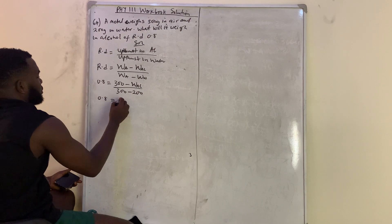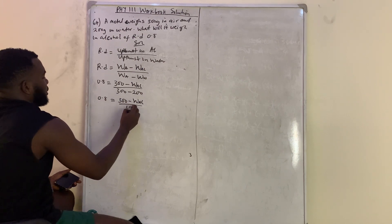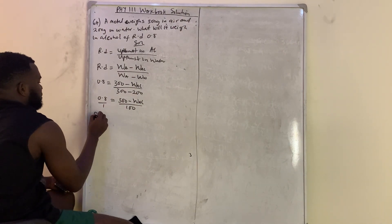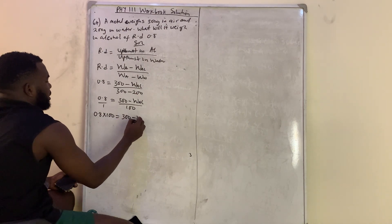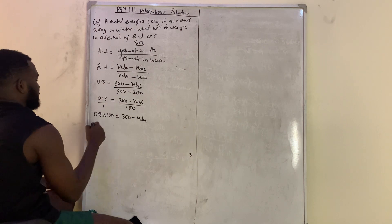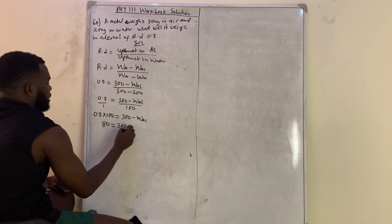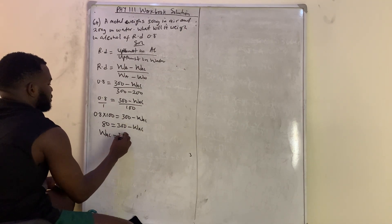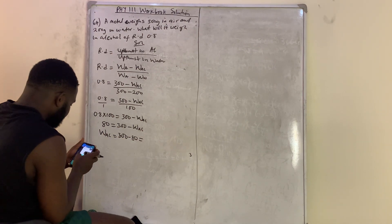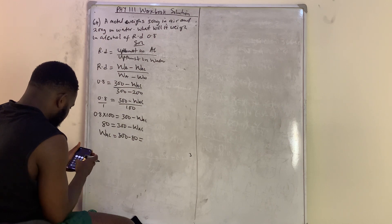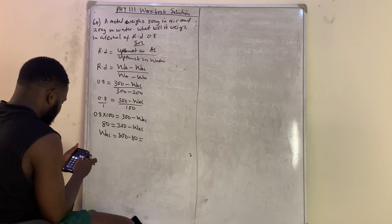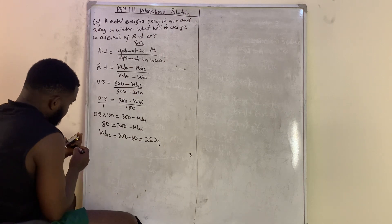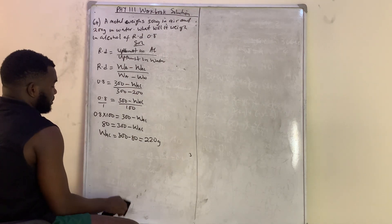Cross-multiplying: 0.8 × 100 = 300 − weight in alcohol, so 80 = 300 − weight in alcohol. Collecting like terms: weight in alcohol = 300 − 80 = 220 grams. You can convert to kilograms by dividing by 1000.